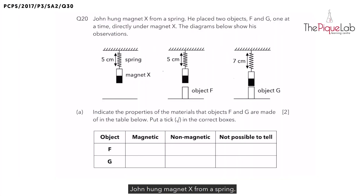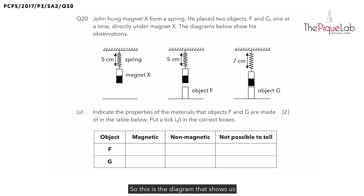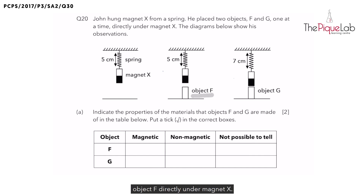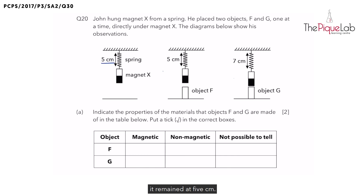John hung Magnet X from a spring. He placed two objects, F and G, one at a time directly under Magnet X. The diagrams show his observations. This diagram shows Magnet X hanging from a spring. Now look at what happened when we placed Object F directly under Magnet X — look at the length of the spring: from 5 cm it remained at 5 cm.